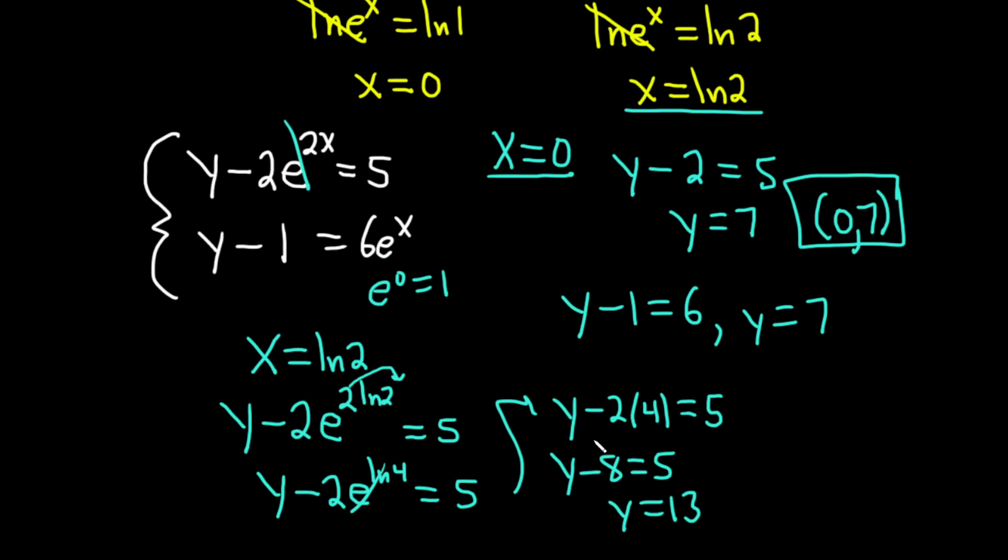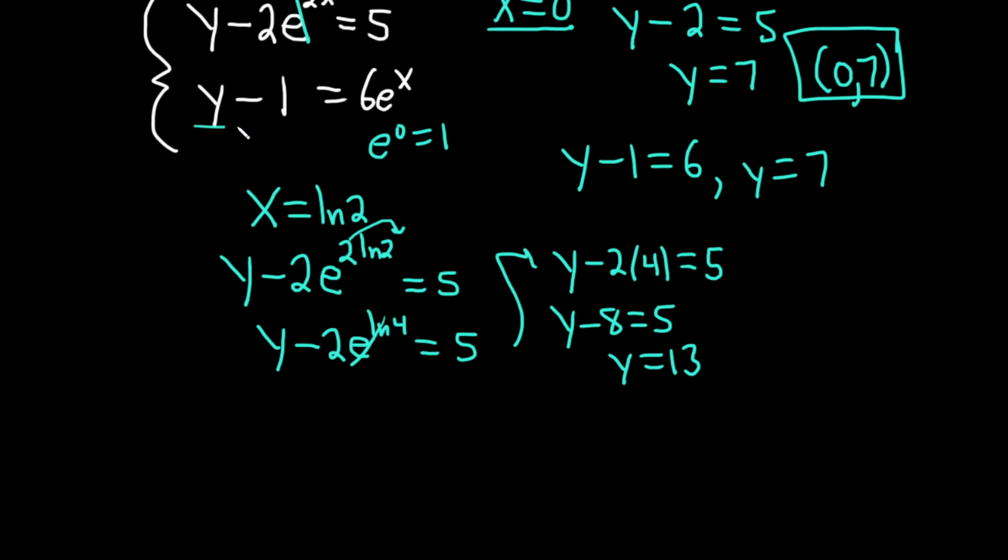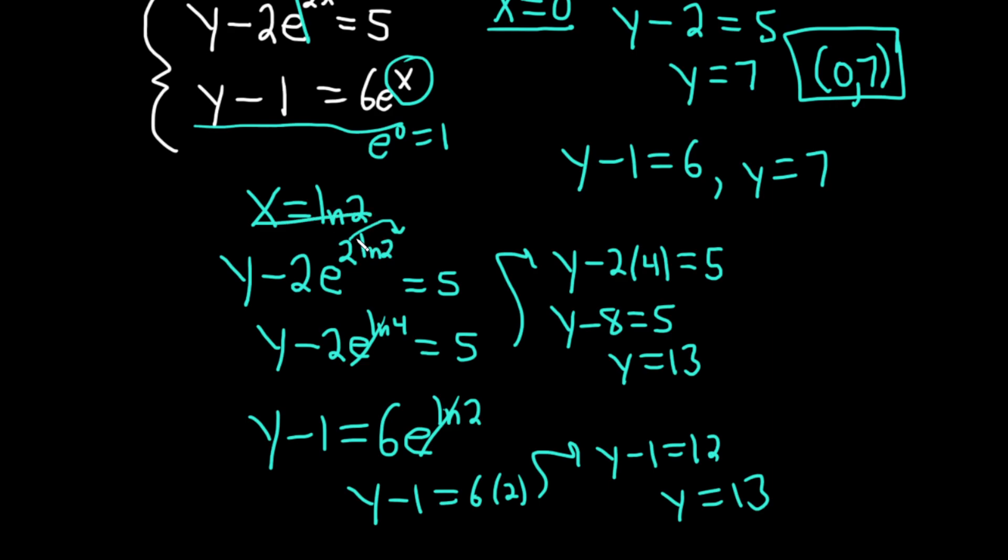But we should check just to make sure everything is good. Let's plug it into the other one just to make sure everything's okay. So plugging it into the second equation, we have y minus 1 equals 6, e to the ln 2. And this is just going to be y minus 1, 6 times 2. So y minus 1 is equal to 12. So y is equal to 13. So in any case, when x is ln 2, we end up with y equals 13.